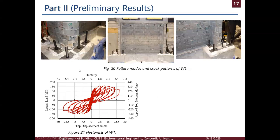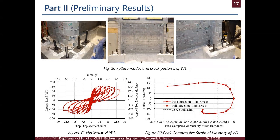This is the hysteresis of the wall. We can see that the wall is ductile, reaching a ductility of six, which is more than that required by the code for this type of wall. We can also observe large compressive strains in the masonry, well beyond what is given by the code, showing that the wall behaves in a ductile manner and that good performance can be achieved with this type of construction.